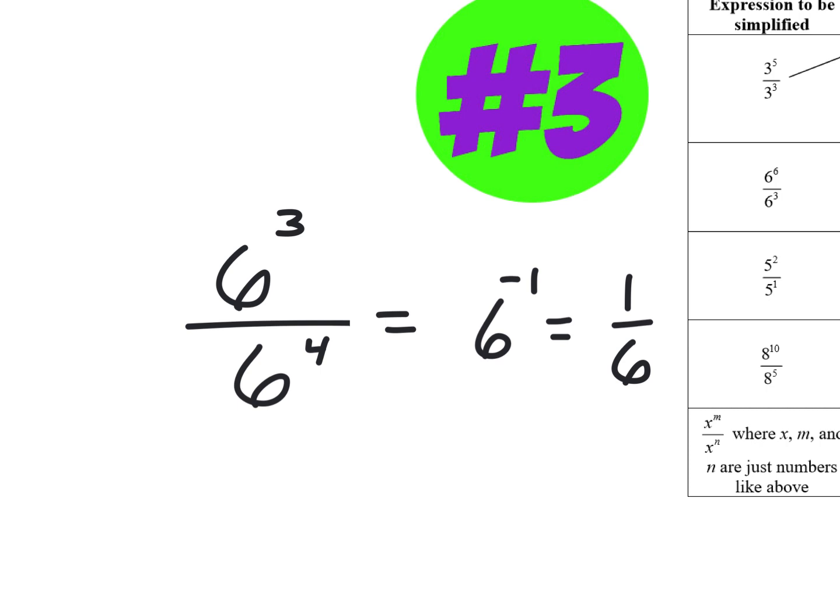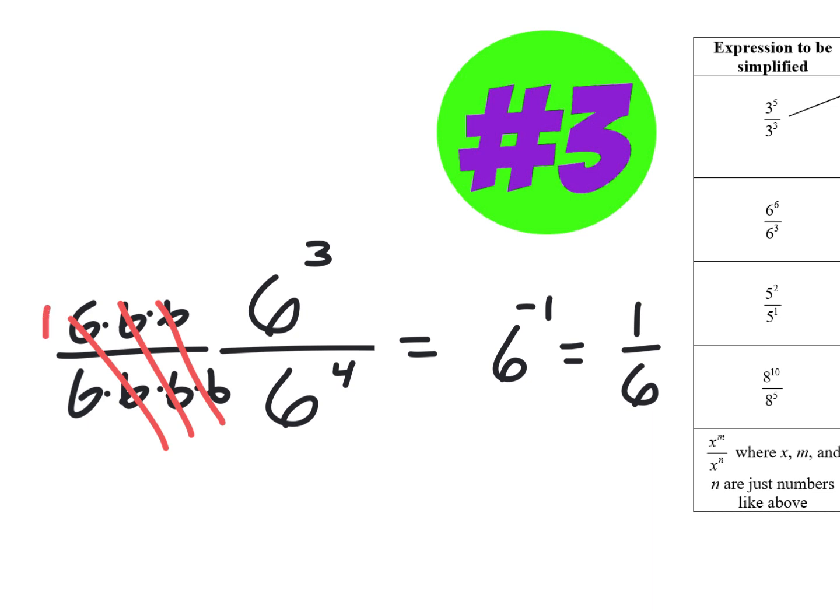Could you have written that out as six times six times six over six times six times six? Yeah. And you would have had cancel, cancel, cancel. There's still one sixth left on the bottom. And you put a one on top. One sixth.